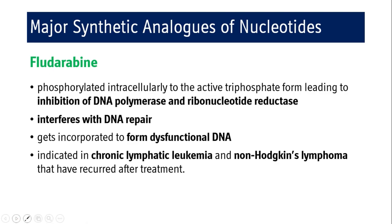Fludarabine is phosphorylated intracellularly to its active triphosphate form, leading to inhibition of DNA polymerase and ribonucleotide reductase. Inhibiting DNA polymerase prevents DNA replication and also interferes with DNA repair. It gets incorporated to form dysfunctional DNA, halting multiplication of malignant cells. Fludarabine finds its indication in chronic lymphocytic leukemia and non-Hodgkin's lymphoma, especially in cases of recurrence after prior treatment.